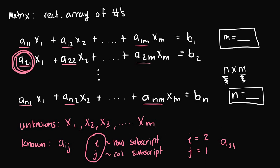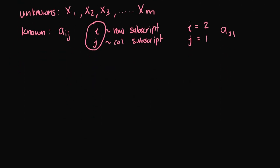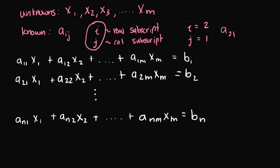We can write this general system of linear equations in augmented matrix form. Remember, augmented matrix form means taking all the coefficients on the left-hand side and all the constant terms on the right-hand side and writing them in a rectangular array. Let's scroll down and rewrite the general system, then proceed with writing its augmented matrix — looking at all the coefficients on the left and all the constants on the right.